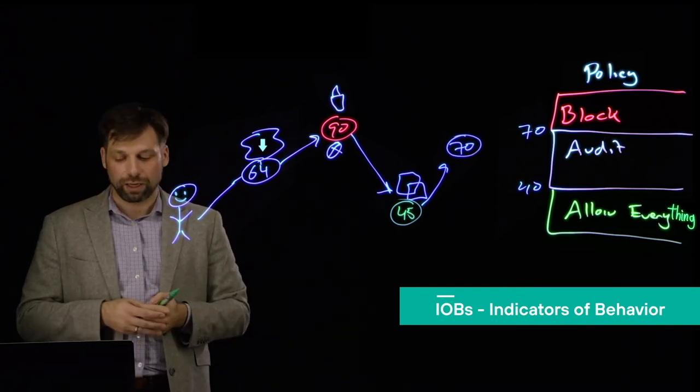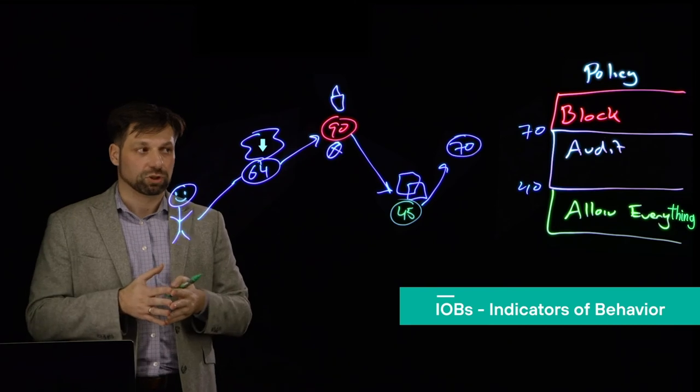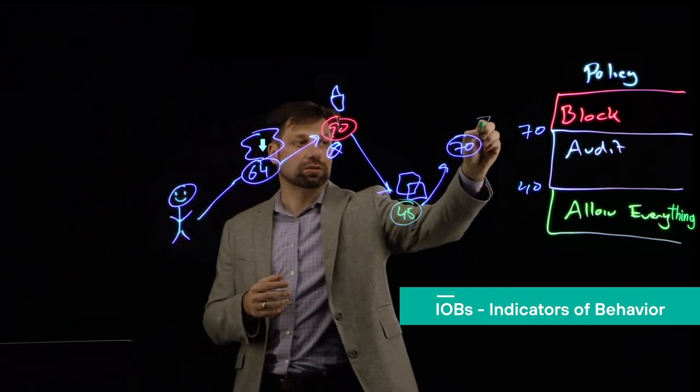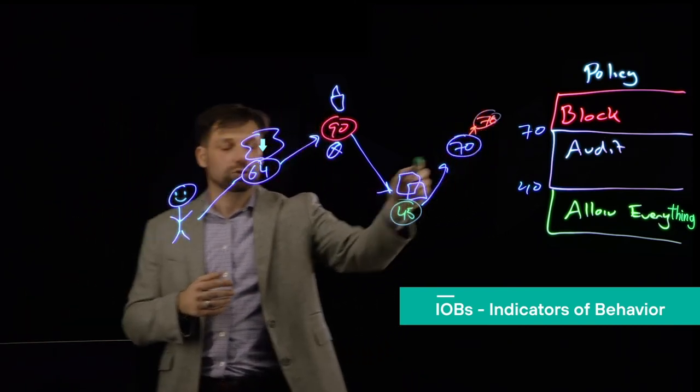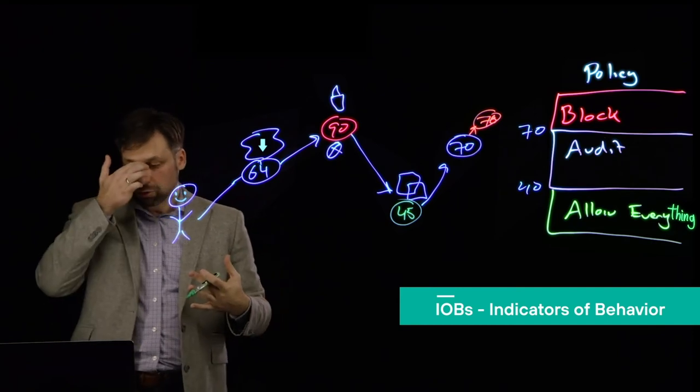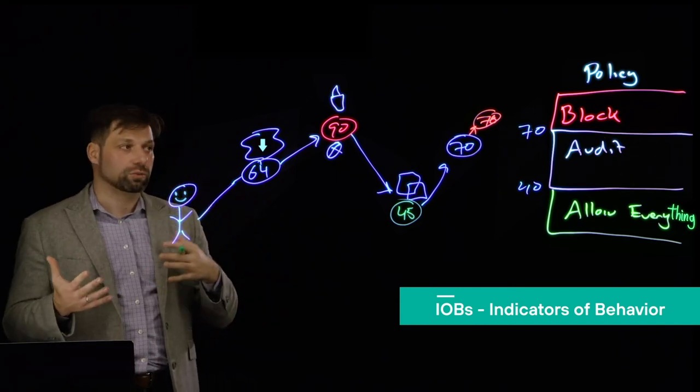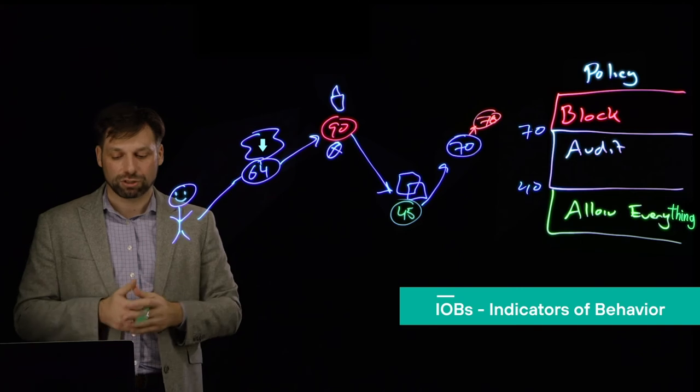Or what if they take that same file and they compress it? So instead of a 70, now we're at 78. So all of a sudden the risk score is going up, and we're getting to a point where do we want to audit them, do we want to block them? You can adjust that policy completely.